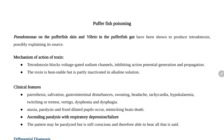Puffer fish poisoning results from the ingestion of puffer fish. What is the cause behind the poisoning? Pseudomonas on the puffer fish skin, or Vibrio in the puffer fish gut, have been shown to produce tetrodotoxin. This is the actual toxin responsible for the clinical scenario, present in the puffer fish gut or skin.